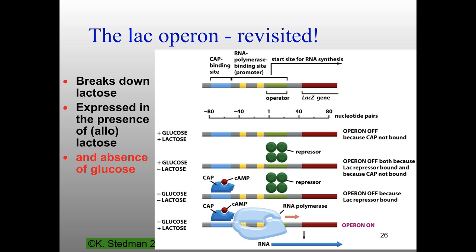The tryptophan repressor mechanism is different. The tryptophan repressor binds to its operator site only when you have tryptophan around, because you don't need to synthesize tryptophan — this is an operon to make tryptophan, not break it down. When you don't have enough tryptophan, the inactive repressor is not bound and RNA polymerase is free to transcribe the genes. But if you have tryptophan, it binds to the repressor and shuts it off, sensing that you have enough and don't need to make more.